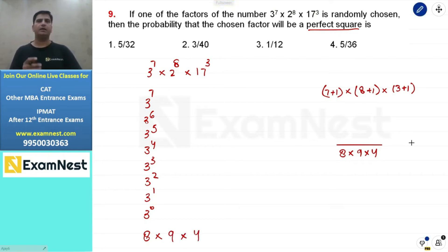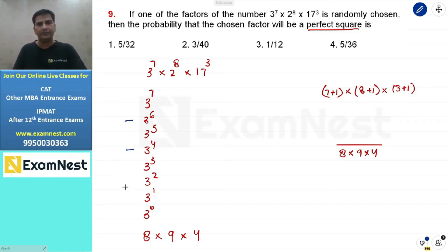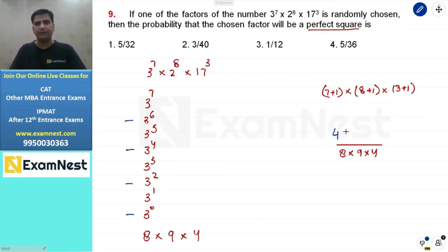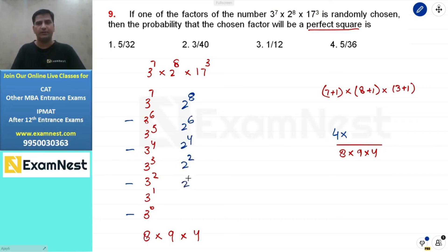We want our factor to be a perfect square. It is necessary to choose powers that are divisible by 2, or zero. For prime 3 (power up to 7): valid choices are powers 6, 4, 2, and 0 — so 4 favorable cases. For prime 2 (power up to 8): valid choices are powers 8, 6, 4, 2, and 0 — so 5 favorable cases.